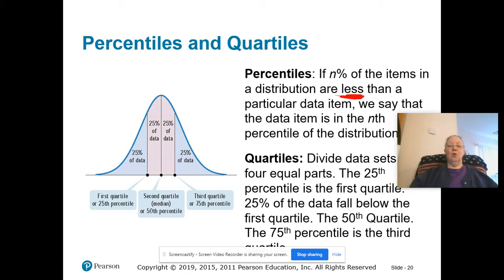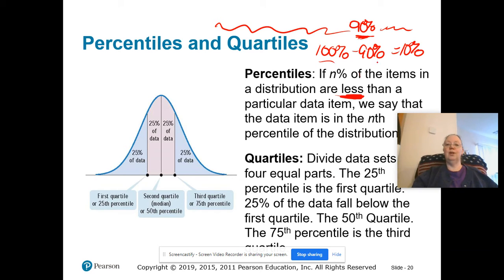So what happens if I end up with a 90th percentile? That tells me that 90% of the items are below, and 10% are above. How did I get the 10%? Well, if I know that 90% are over here, to figure out what's over here, I have to take 100% and subtract 90%, and that tells me 10% would be above. So if I want percent below, I just take the percentile. If I need the percent above, I take 100 minus the percentile.